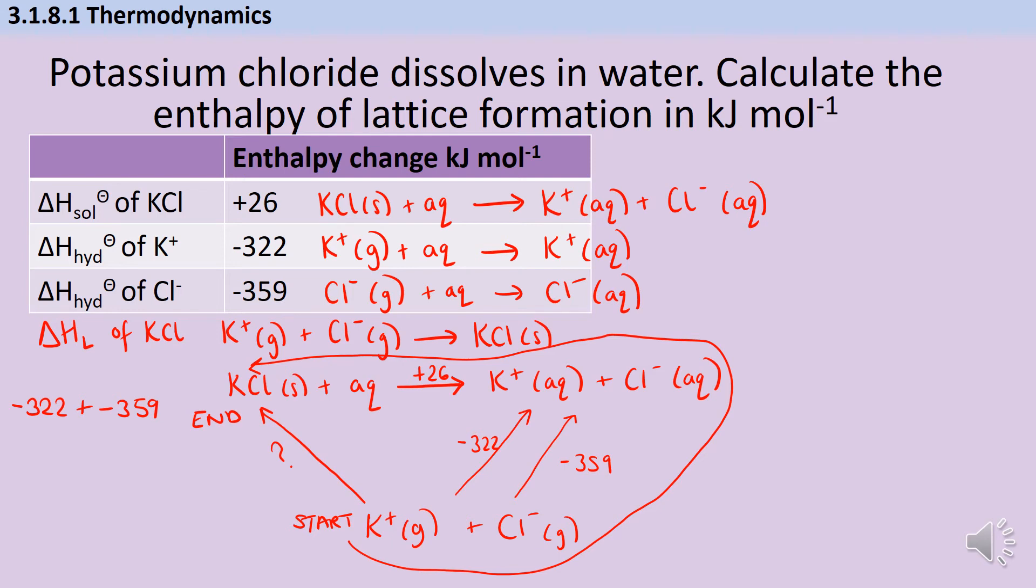And then here where I've got the enthalpy change of solution, I'm now going the wrong way up that arrow. So I'm then going to need to do negative for this, so take away +26. That gives me a total value of -707 kilojoules per mole. So that is my answer for this question mark here. That is my enthalpy change of lattice formation.